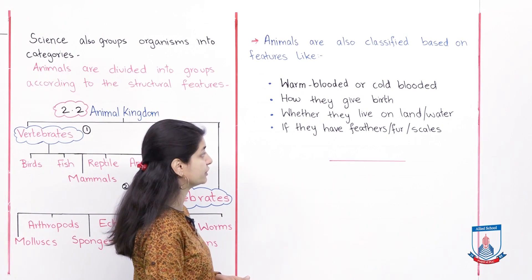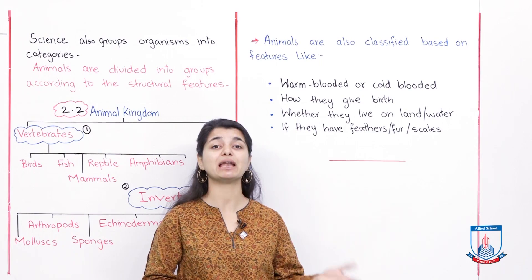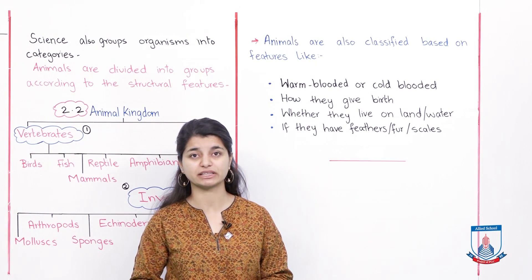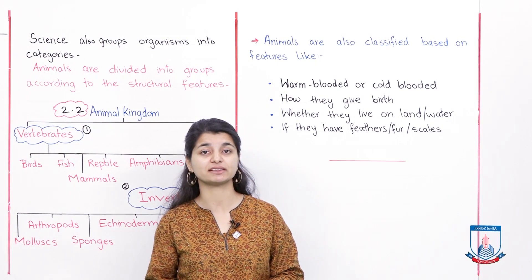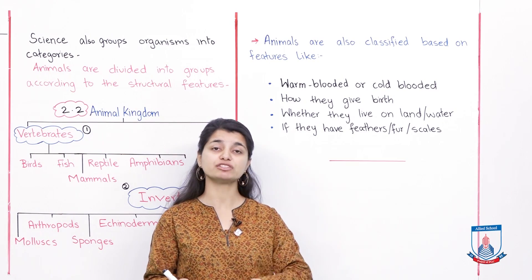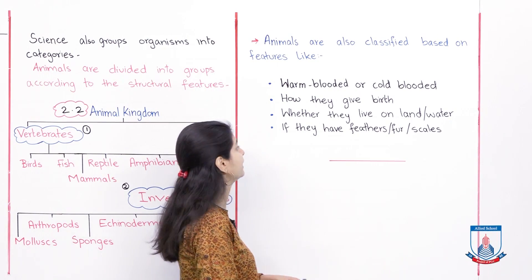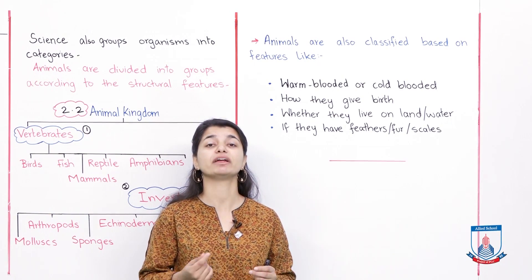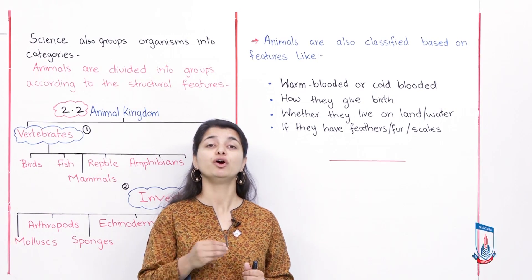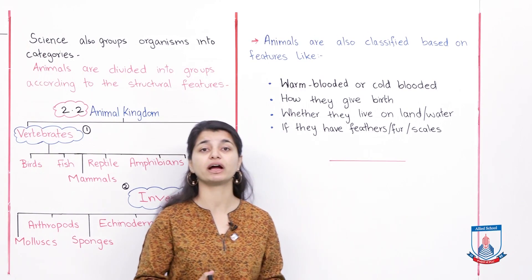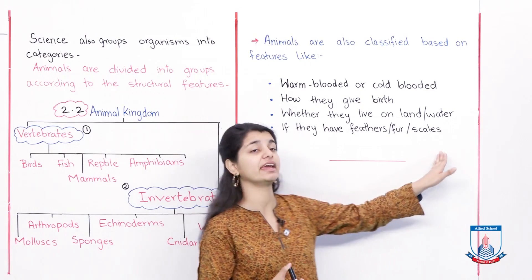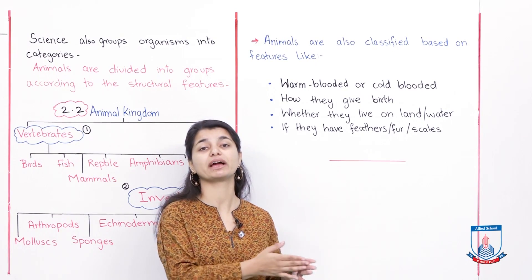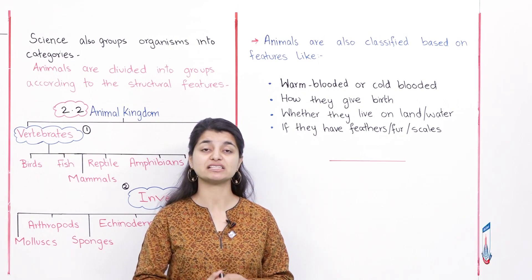Another classification is whether animals live on land or in water. Some animals live in water and cannot live on land, and some animals live on land. This is also a very important differentiation. Animals are further classified by body covering: some animals have feathers on their body, especially birds like chickens and ostriches. Some have fur, like polar bears. And some have scales, like snakes and certain fish. So animals with feathers are in one group, animals with scales in another group, and this is another way we classify animals.